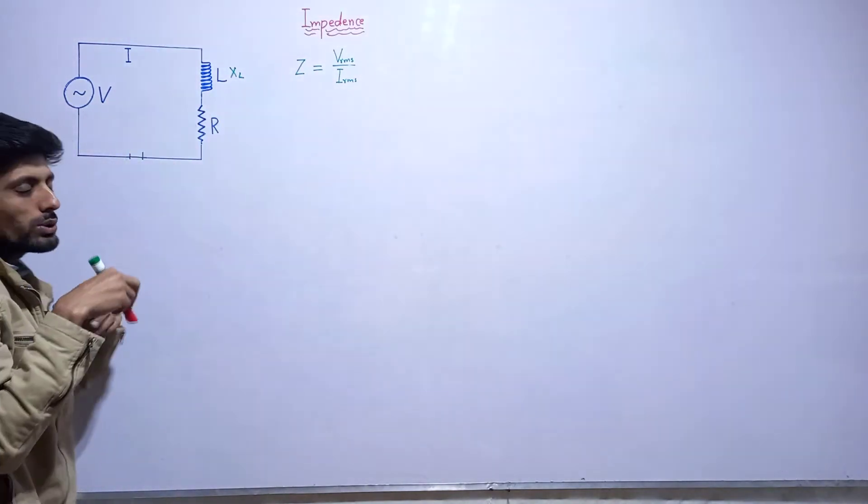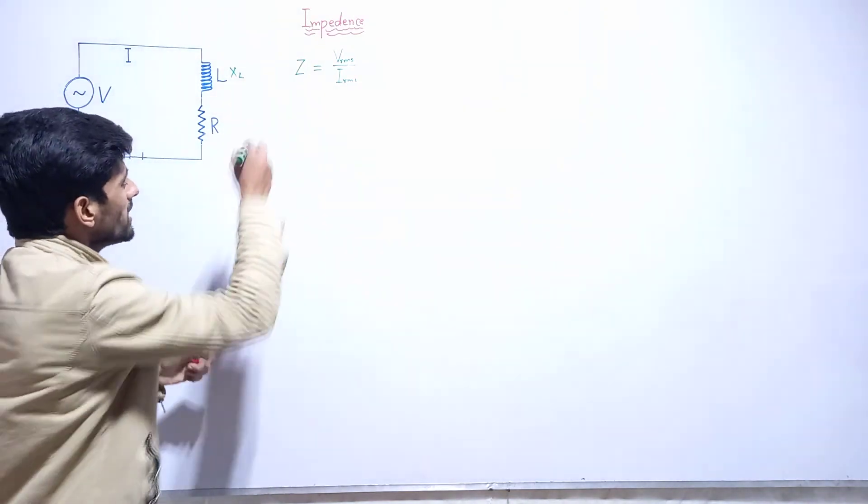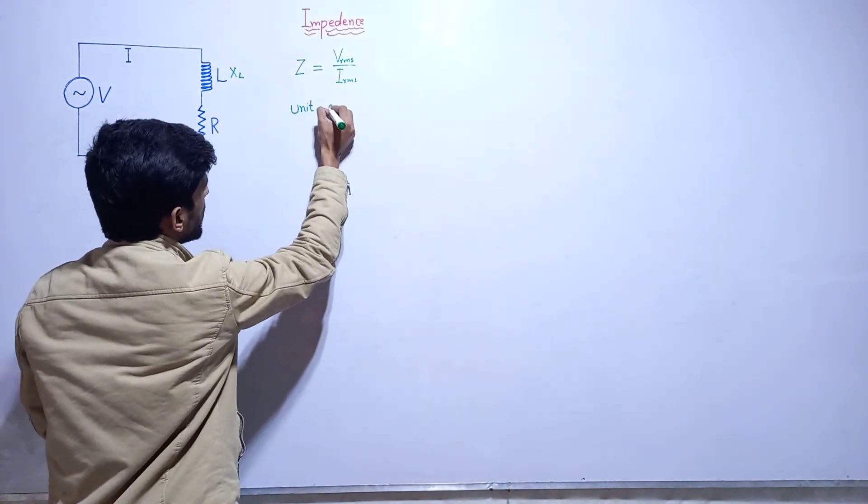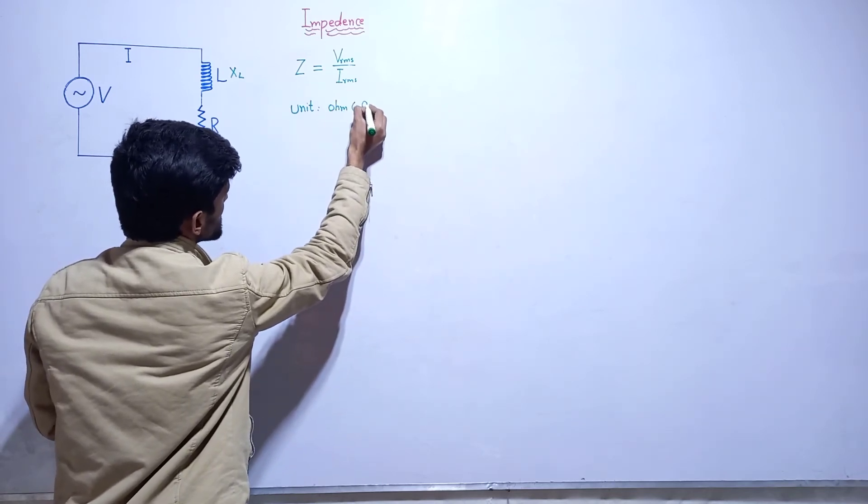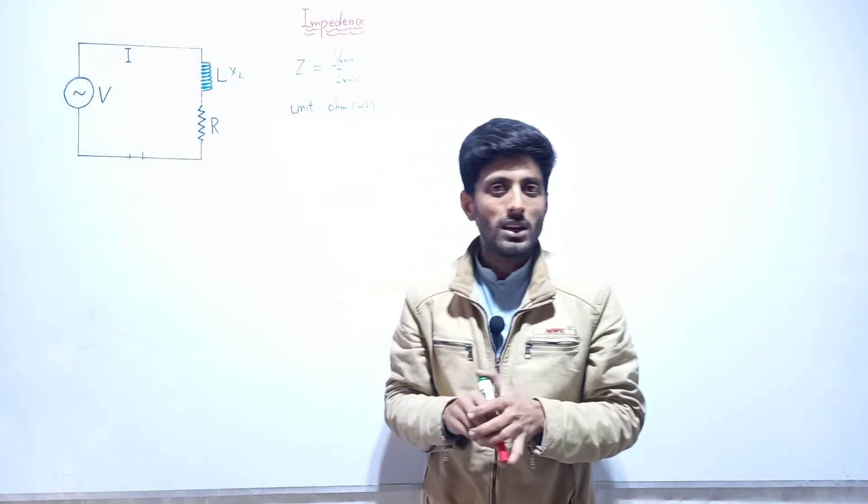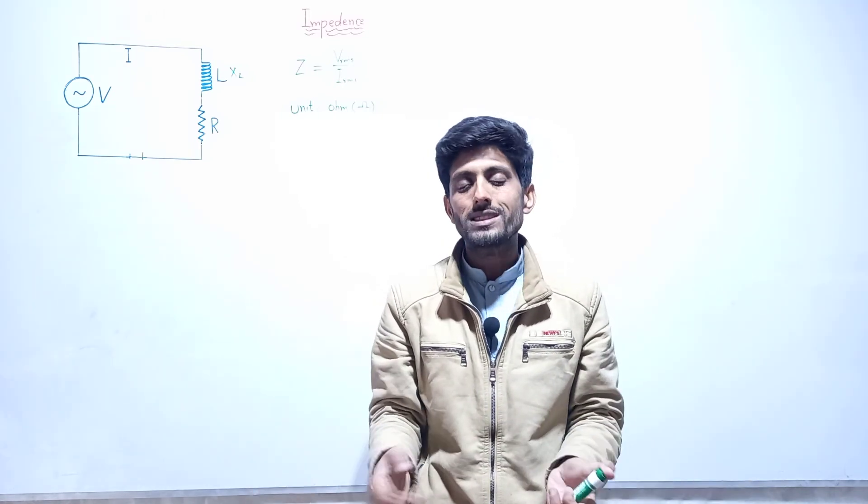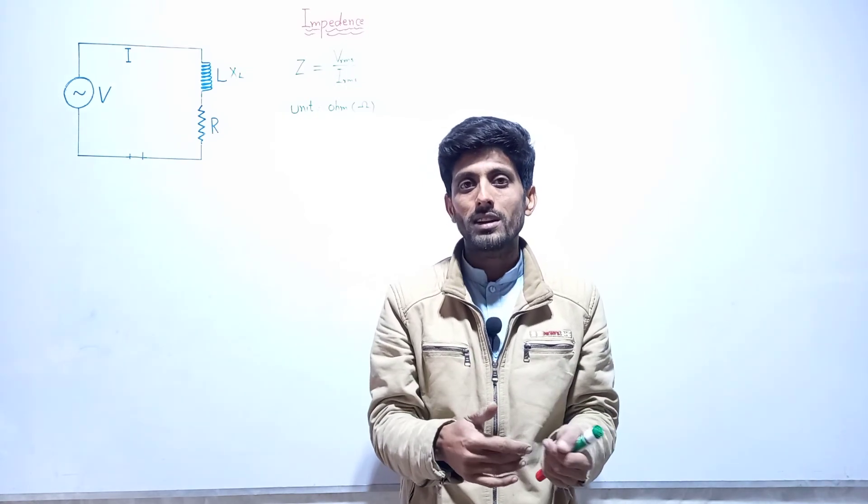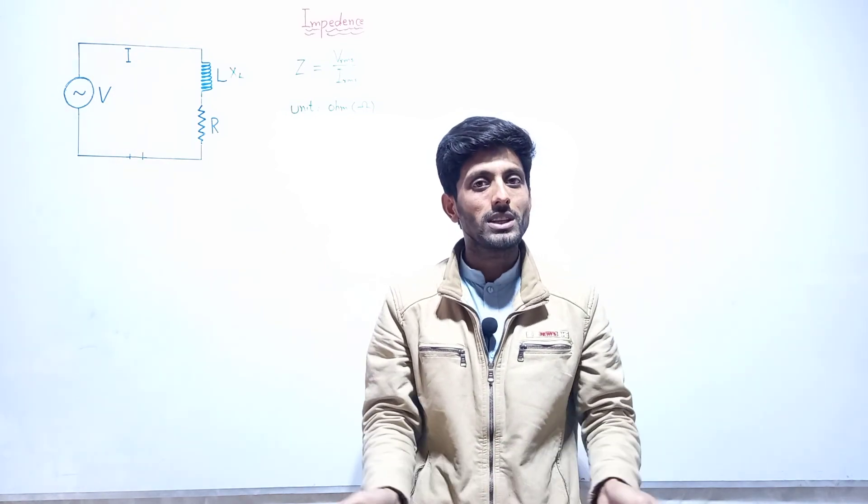The unit of impedance is the same as resistance, represented by omega. This was a short concept on impedance. A common short question is: the combined effect of resistance and reactances in an AC circuit is said to be impedance. Next, we will deal with RLC circuits—RLC series and parallel. In all these circuits, we will calculate the impedance of the circuit.